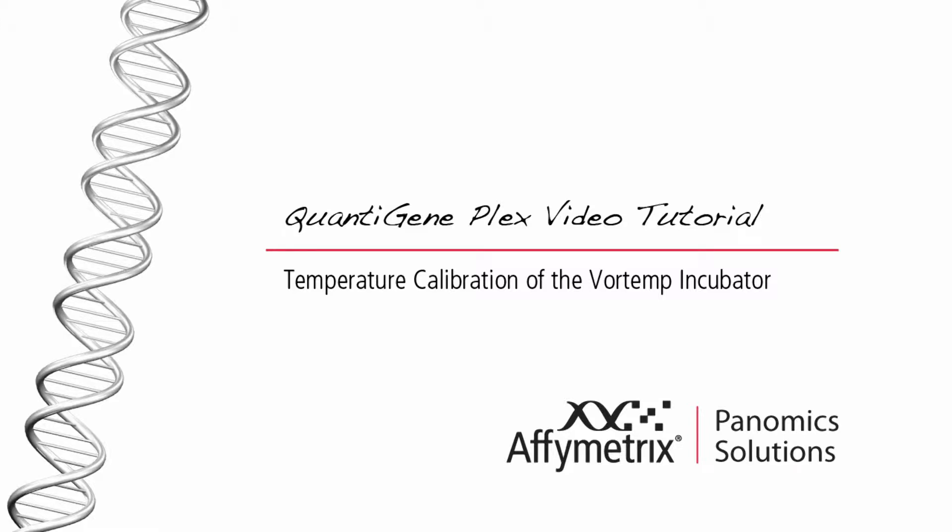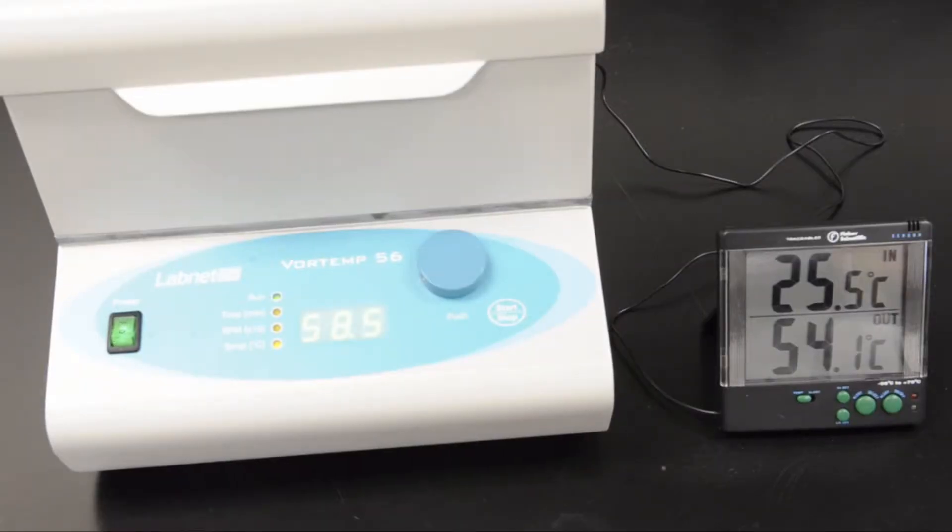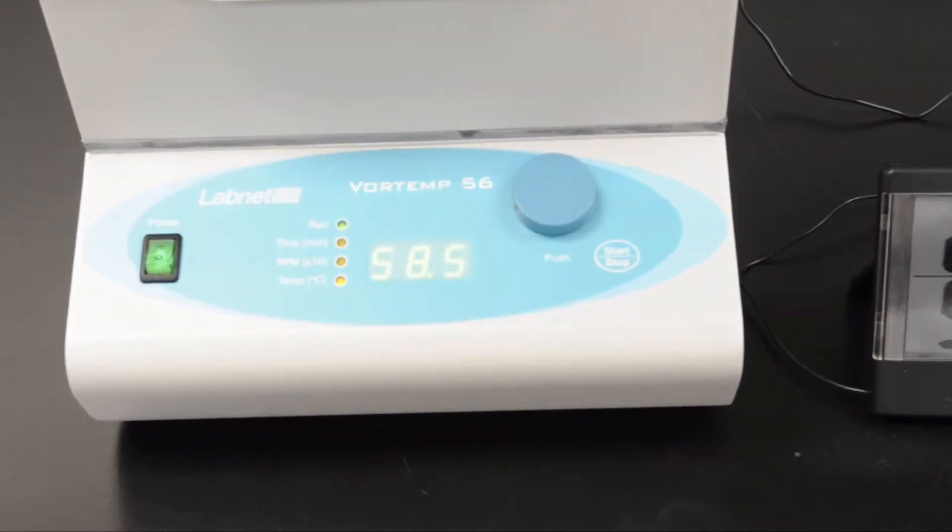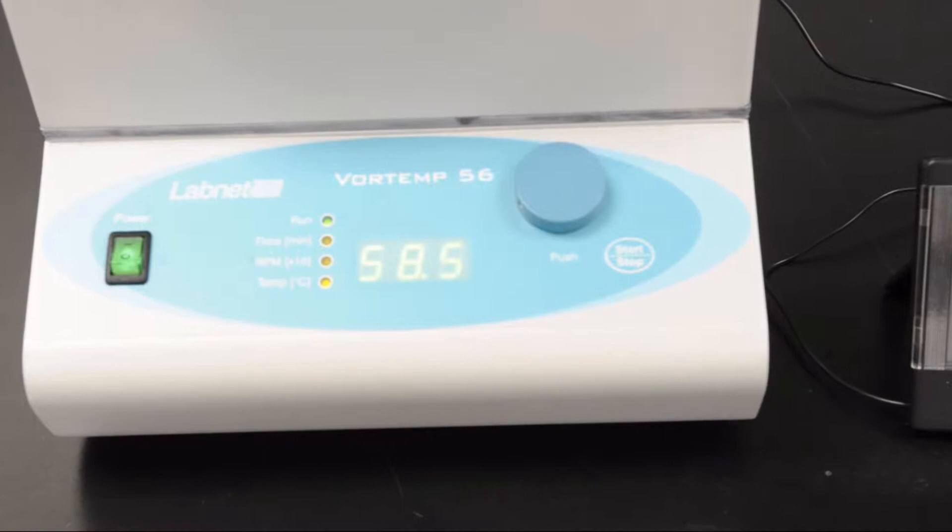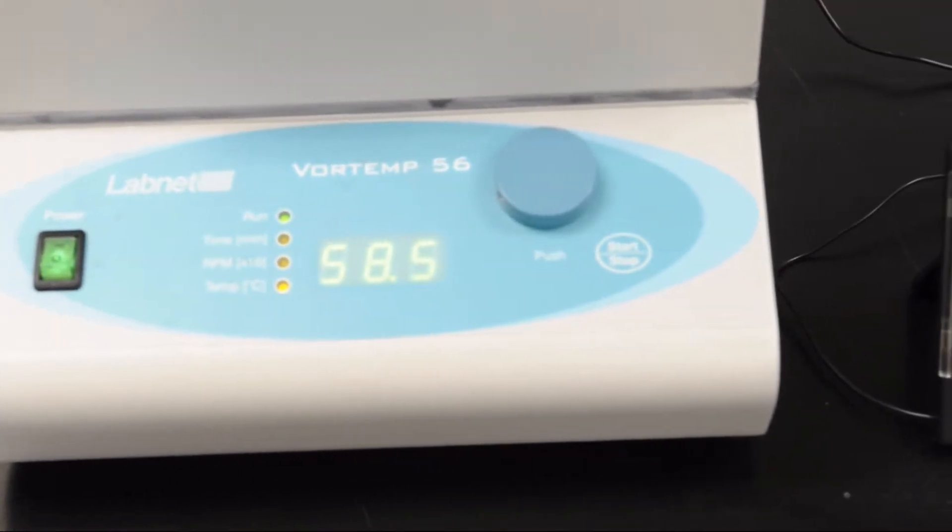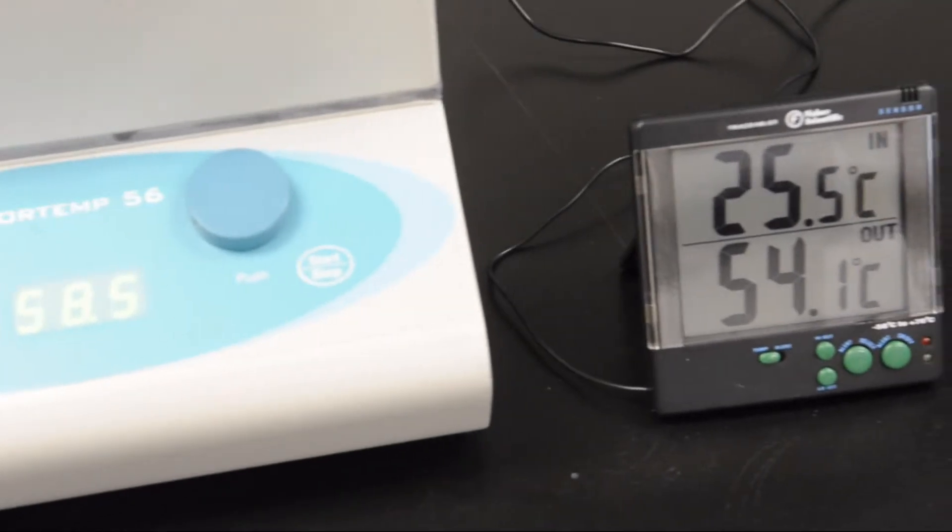This QuantaGene training tutorial provides instructions for calibrating the temperature of a Vortemp shaking incubator. This procedure is critical to the QuantaGene Plex assay because the assay is based on nucleic acid hybridization, and incorrect temperature settings can cause high background, loss of signal, or poor CVs.